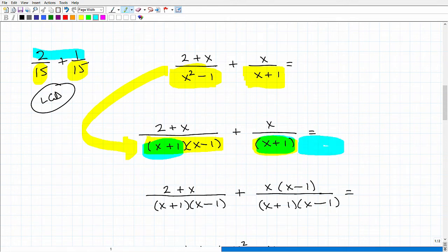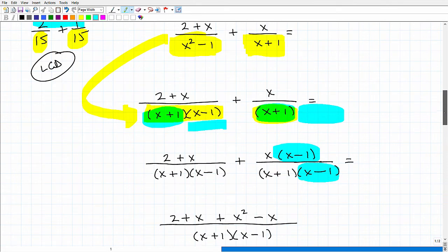But this fraction over here is missing the x - 1. So what I'm going to do is I'm going to multiply this bottom, this denominator here by x - 1. So if I multiply the denominator by x - 1, I also have to multiply the numerator by x - 1.